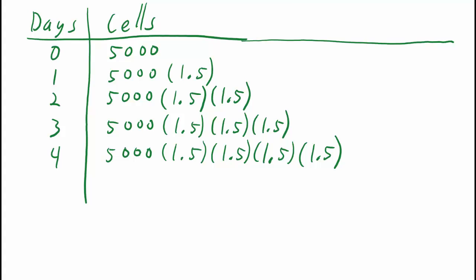On day four, we have 5,000 times 1.5 to the fourth power, because we're multiplying by 1.5 four times. After three days, we're multiplying by 1.5 three times, so we can just raise 1.5 to the third power.